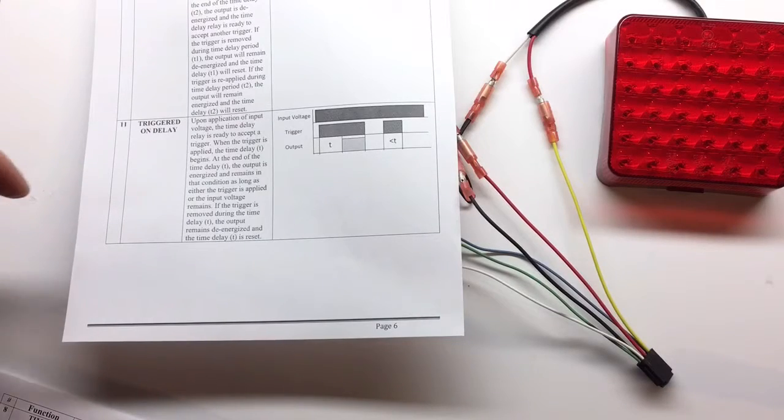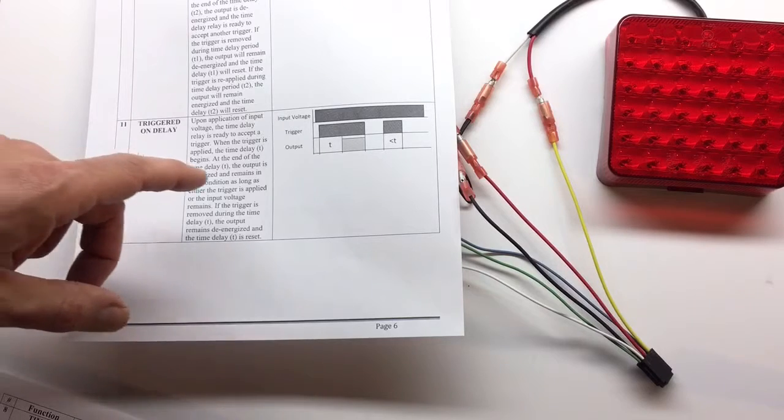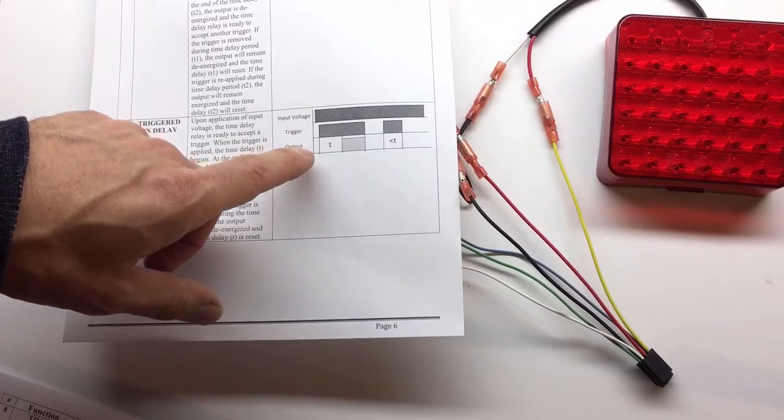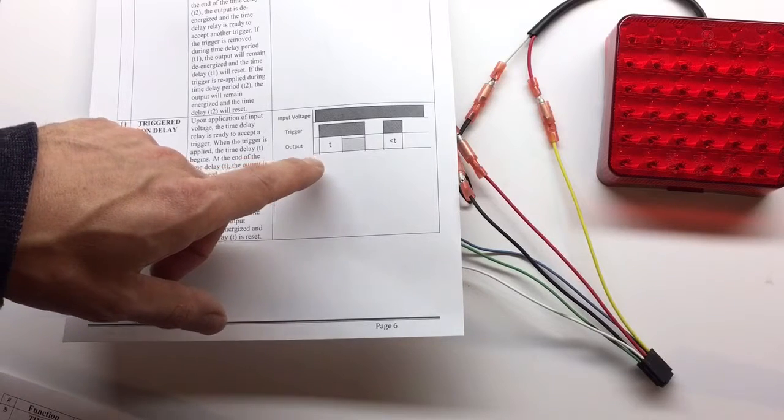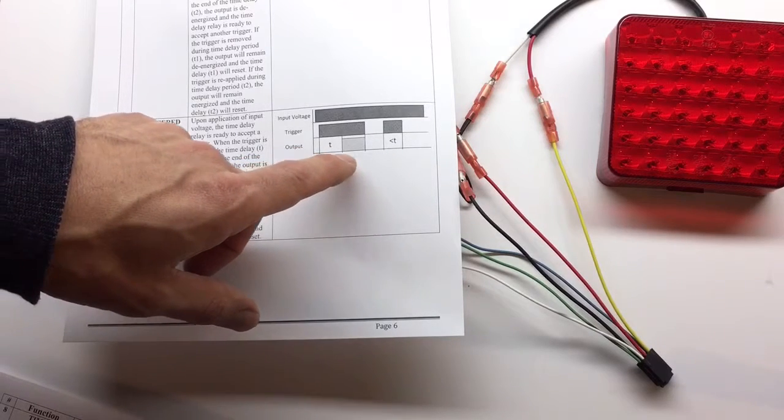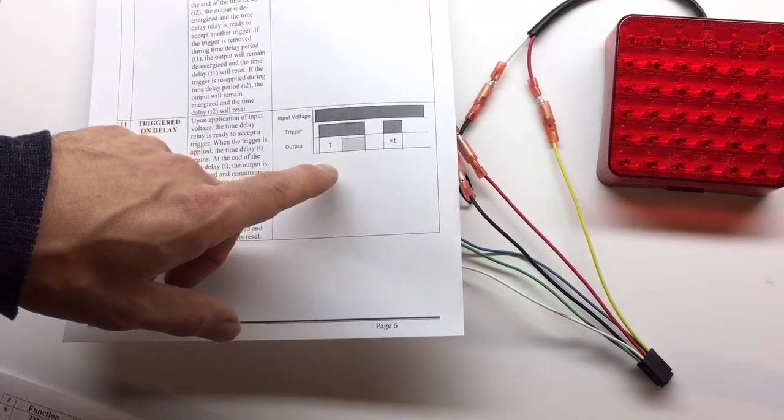Okay, number 11. Triggered on delay. So in this case, when we apply the trigger, light will not come on for a period of time, T, and then it will come on until we release the trigger.